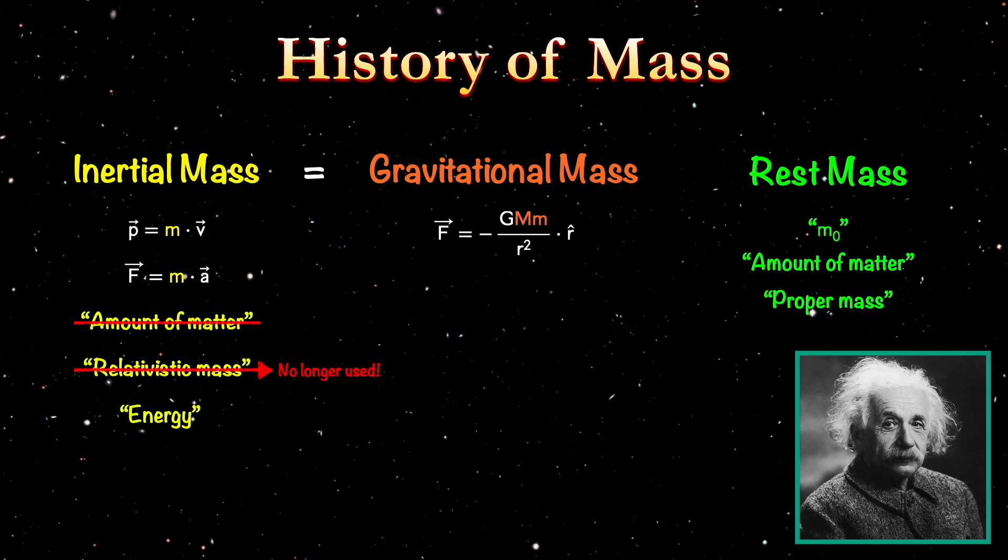You either have to somehow count up all of the individual particles in the sun, and then multiply by the rest mass, which is not doable. Or you have to have measured it prior to it forming a star. Meaning you have to measure the mass of the cloud that will eventually collapse and form into a star. But that can take millions, if not billions of years, and we don't have time to do that.